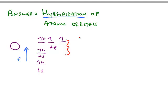And what we do is we mathematically mix or hybridize the 2s orbital with the 3 2p orbitals. And mathematically mixing those functions together, we put in 4 atomic orbitals and we get out the same number, 4 new orbitals, but these are hybrid orbitals.